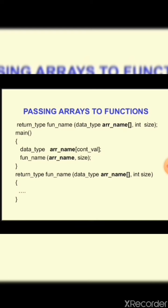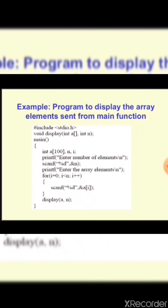Let's take an example. In main, while calling the function, we write the function name followed by the array name along with the valid size we want to use. The intention of this program is to display values received from the user. Inside main, we get values from the user and call a function called display, which prints those values. Inside main, we first declare the array a of size 100.